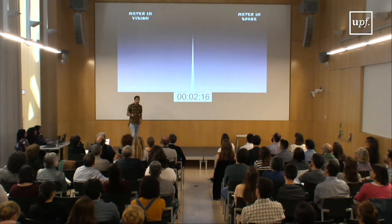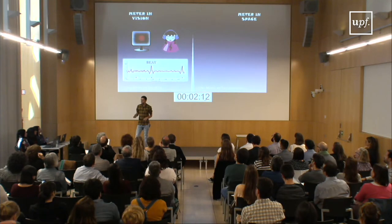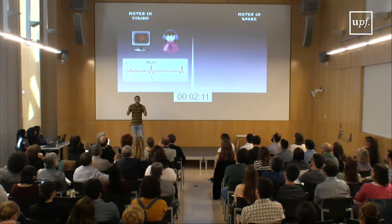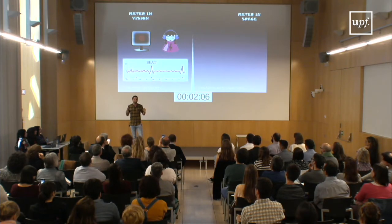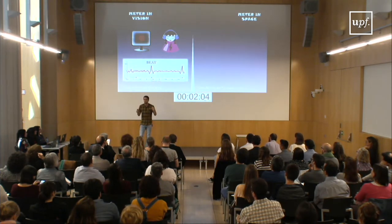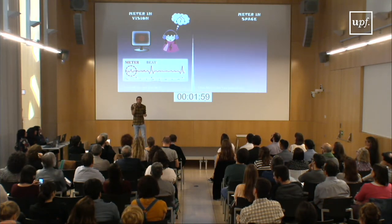In our first experiment, we asked musicians to look at a blinking flash, and we found that the neurons synchronized to the flash. Then we asked them to just imagine a ternary meter on the same visual flash, and we found a peak appearing at the frequency of the meter — so we could find meter in the visual modality.